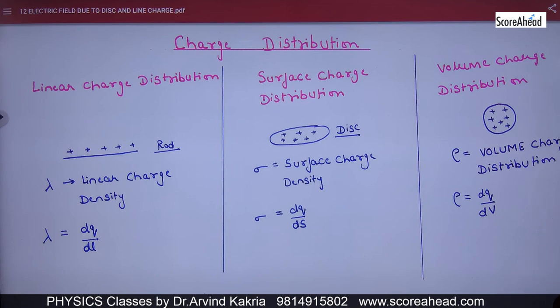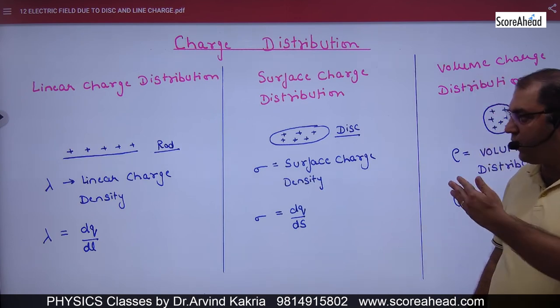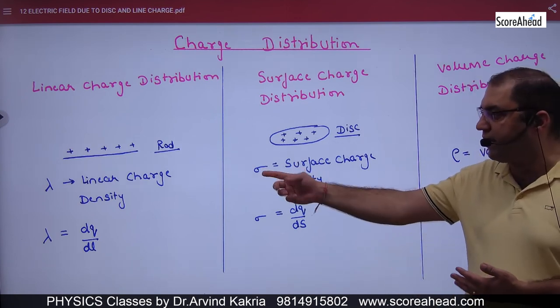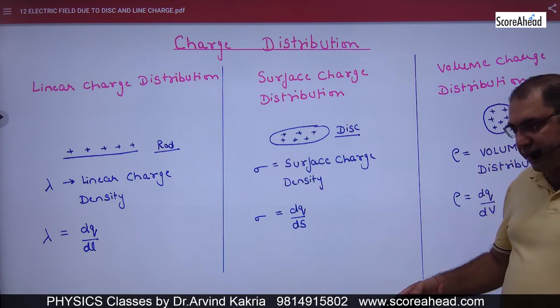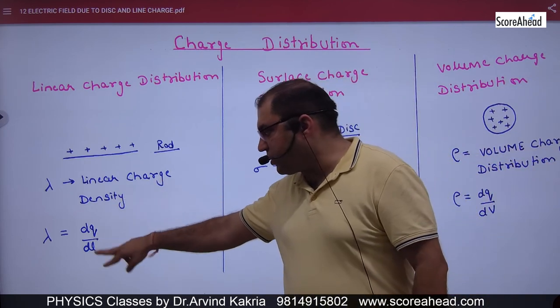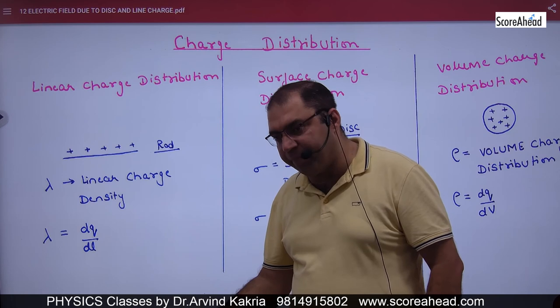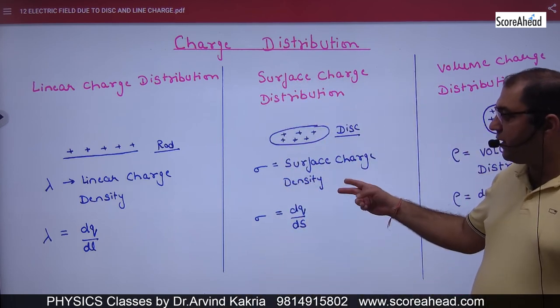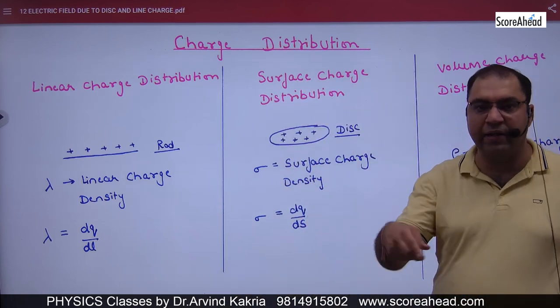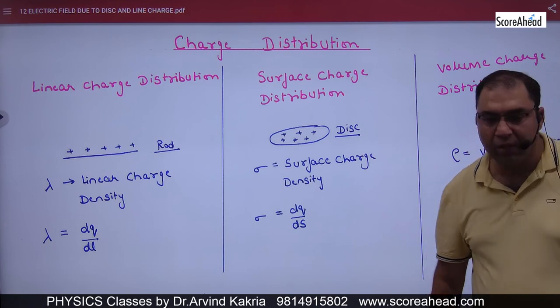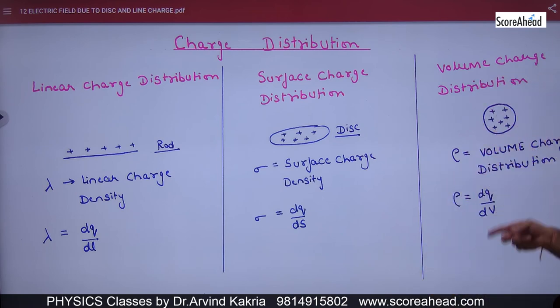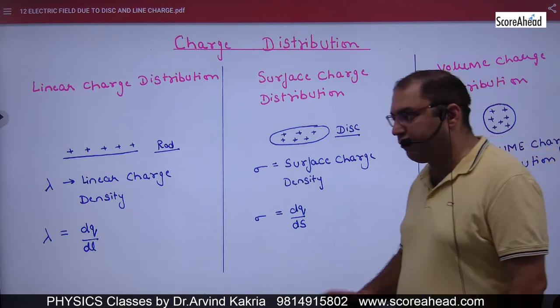So charge distribution is lengthwise, area-wise, volume-wise. If lengthwise, density is lambda. What does lambda mean? Linear charge density. So what is the charge? dQ by dL. Surface charge density, sigma, dQ by dA. That is amount of charge per unit area. And volume charge density, rho, that is charge distributed over volume, dQ by dV.